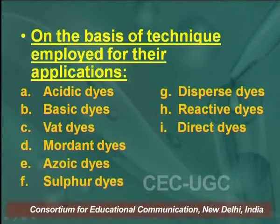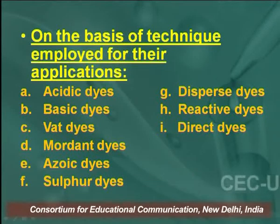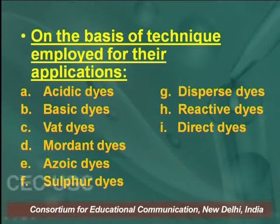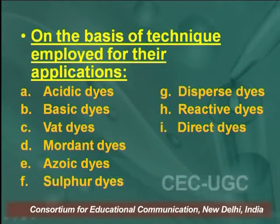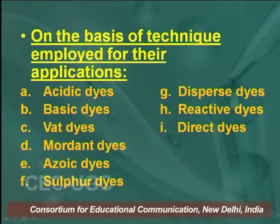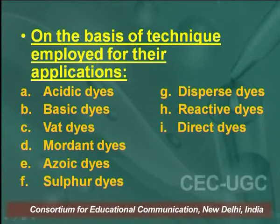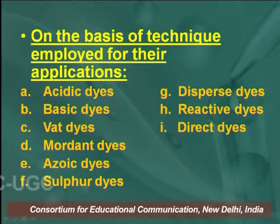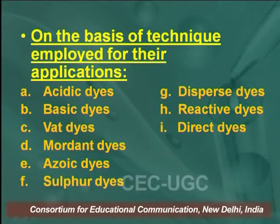On the basis of their application, we can classify dyes into: acidic dyes, basic dyes, vat dyes, mordant dyes, azoic dyes, sulphur dyes, dispersed dyes, reactive dyes, and direct dyes. All these dyes are classified on the basis of their applications used by people in the colour industry.